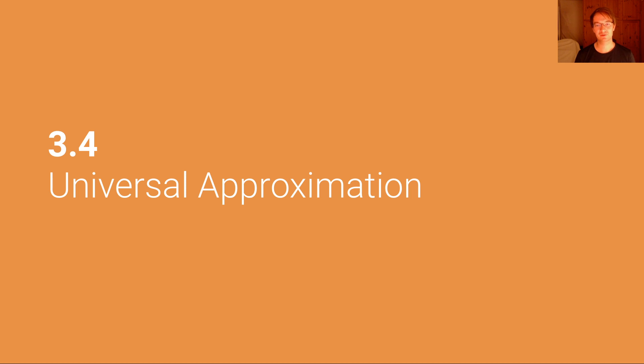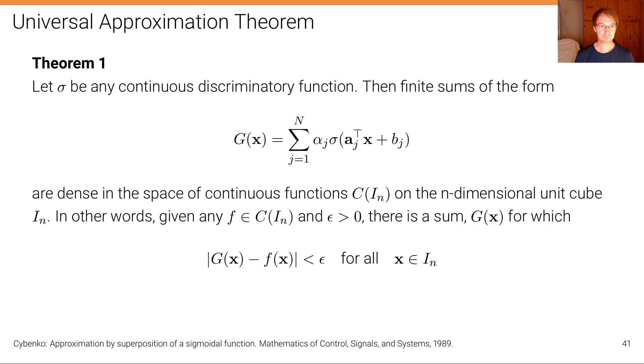If one allows to increase the number of hidden units, the number of neurons in the hidden layer arbitrarily. This is quite a remarkable result and one of the fundamental results in deep learning. It's called the Universal Approximation Theorem.